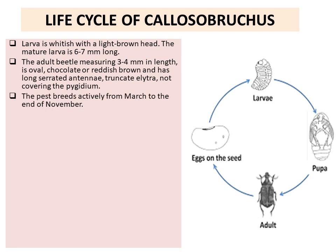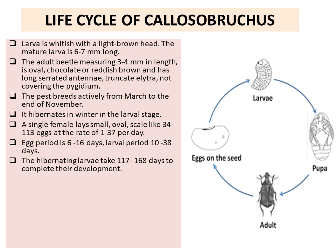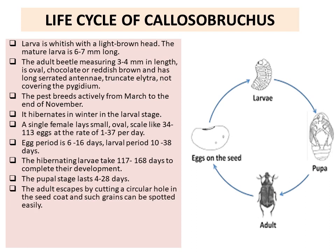The pest breeds actively from March to end of November and hibernates in winter in the larval stage. A single female lays small, oval, 34–113 eggs at a rate of 1–37 eggs per day. The egg period is 6–16 days. The larval period is 10–38 days; hibernating larvae take 117–168 days to complete their development. The pupal stage lasts 4–28 days. The adult escapes by cutting a circular hole in the seed coat, and the average lifespan of the adult is 5–20 days.